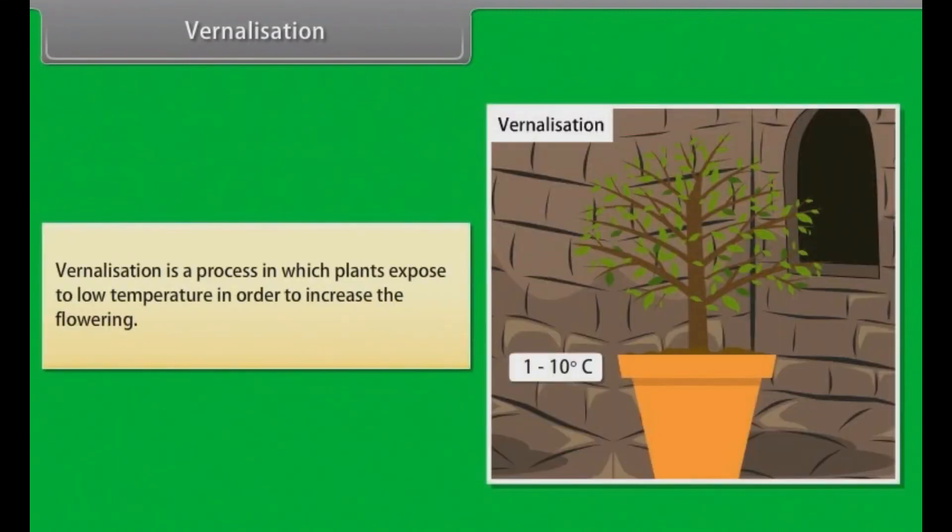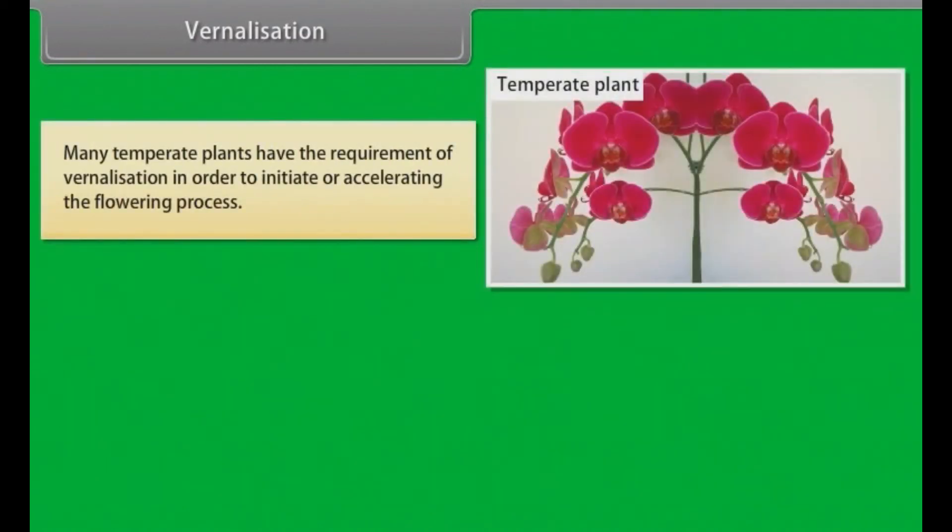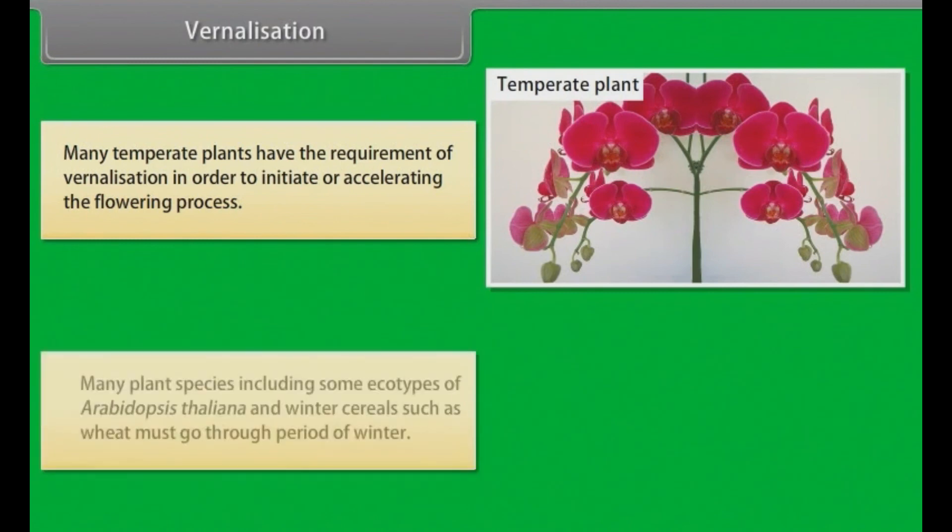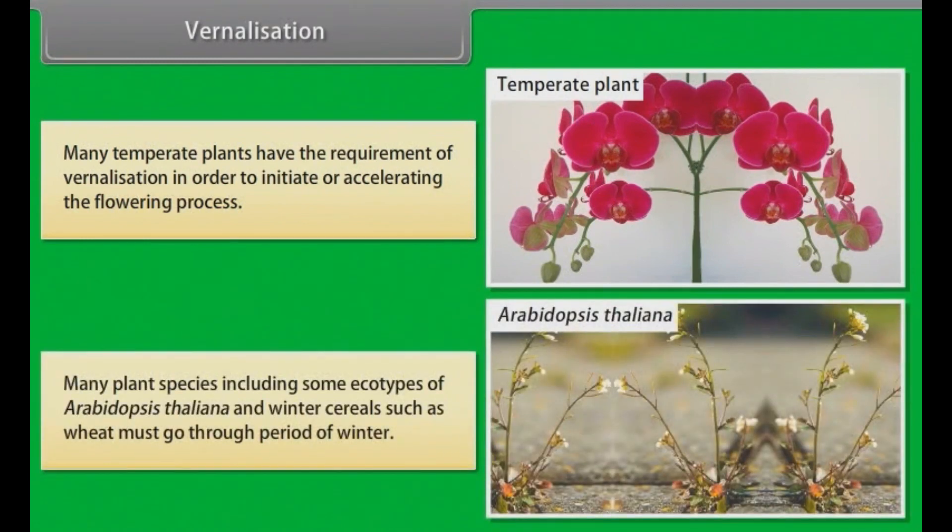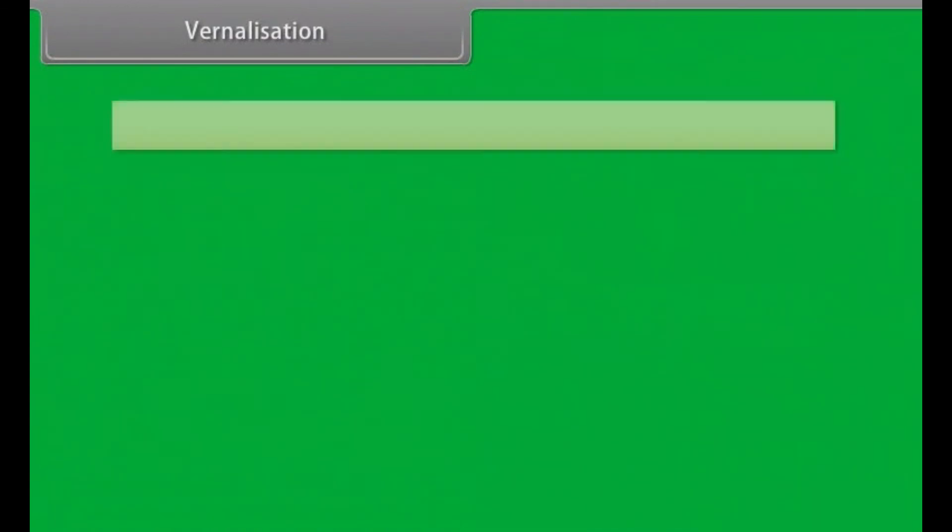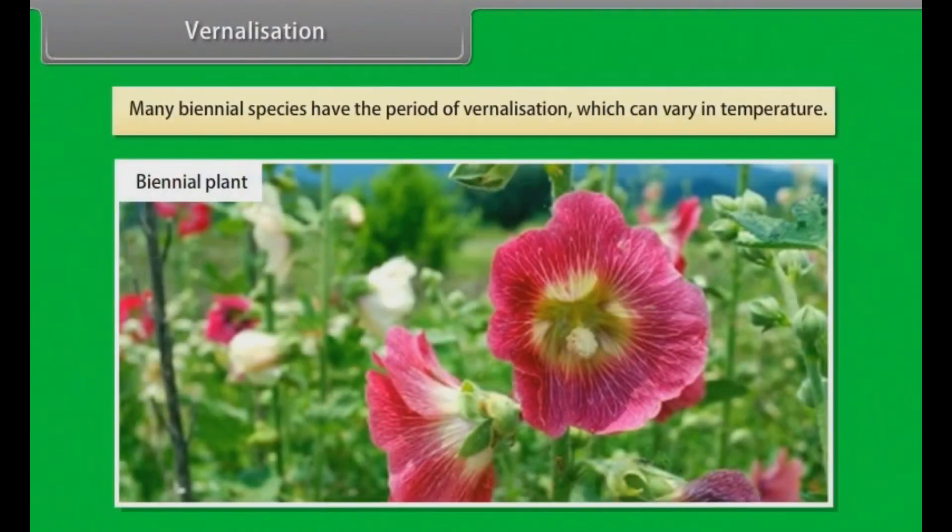Vernalization. Vernalization is a process in which plants are exposed to low temperature in order to increase flowering. Many temperate plants have the requirement of vernalization in order to initiate or accelerate the flowering process. Many plant species include some ecotypes of Arabidopsis thaliana and winter cereals such as wheat must go through a period of winter. Many biennial species have the period of vernalization which can vary in temperature.